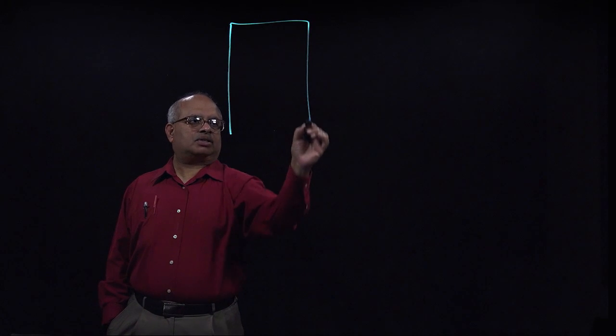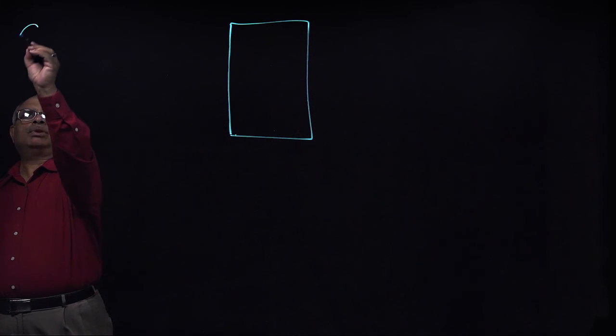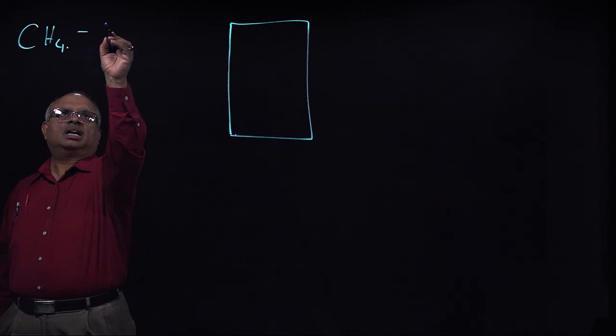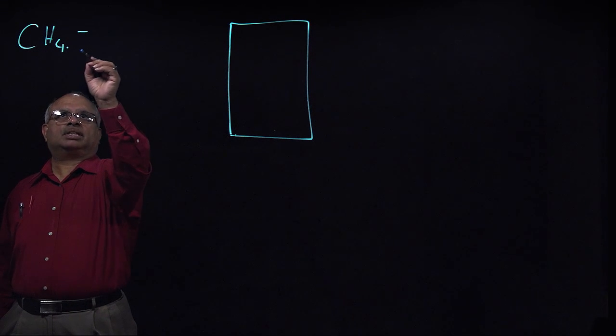In a combustion chamber, we burn gases, we burn liquids, we burn solid fuels. Let's take a simple example here of combustion of methane. So we have a combustor — we're burning methane in this reactor, which is basically natural gas without any kind of impurities.